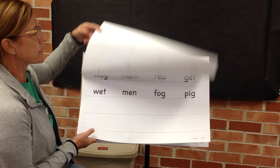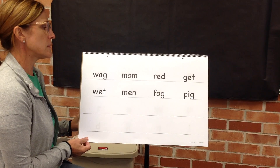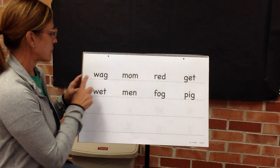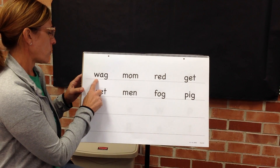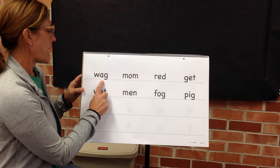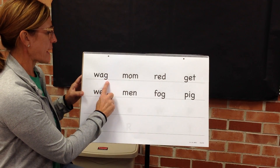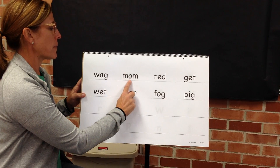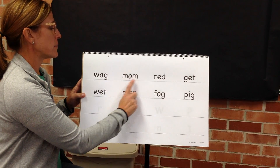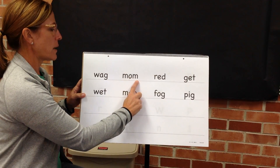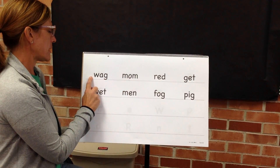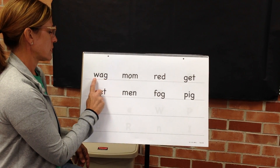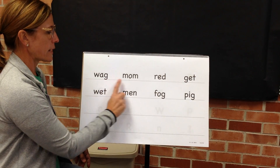Next we will blend sounds to make words. I will model the first two. My turn. Blend. W. Ag. Word. Wag. My turn. Blend. Mom. Word. Mom. Your turn. Blend. Ag. Word. Wag. Yes, wag.